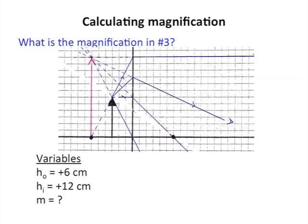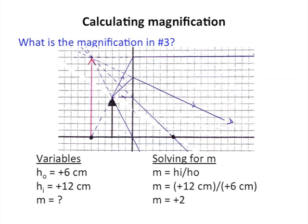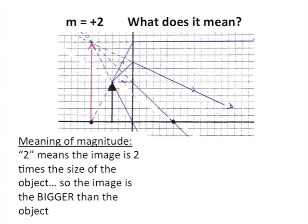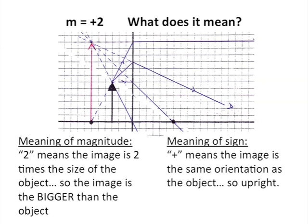One more example: what is the magnification in question number 3? This is a virtual image, so we might expect it to be a little different. The object height is positive 6 — it's upright. The image height is positive 12, and it is also upright. Calculating the magnification, we get positive 2. The 2 means the image is 2 times the size of the object, so the image is bigger. The positive sign means the image has the same orientation as the object, so it's upright.